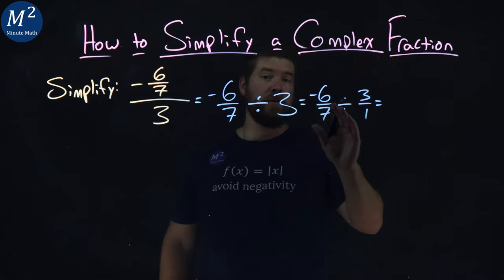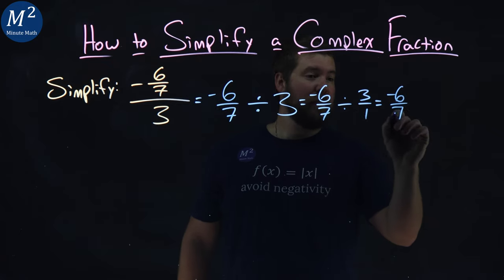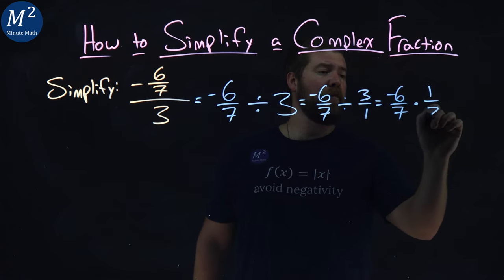Then, division is the same thing as multiplication of the reciprocal. So negative six-sevenths divided by three over one is the same thing as multiplied by one over three.